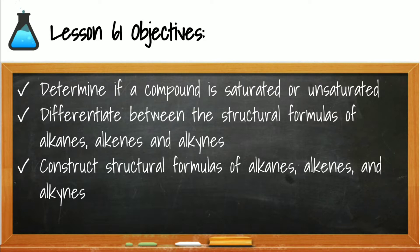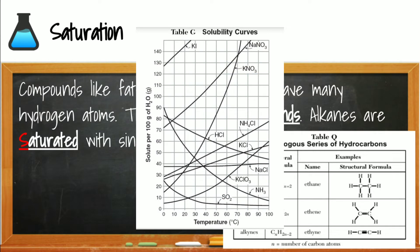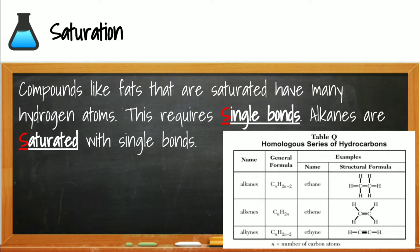We've used the word saturated before when we were describing solutions on reference table J. We can recall that saturated solutions were at equilibrium because they had the maximum amount of dissolved solute — that means their rate of dissolving equaled the rate of recrystallization. In organic compounds, the word saturated still means maximum, but for a slightly different reason. Saturated bonds require single bonds between the carbons.